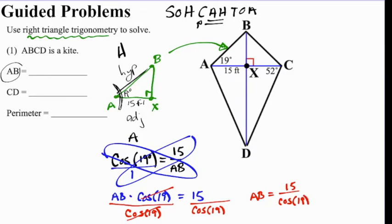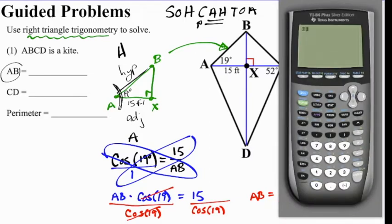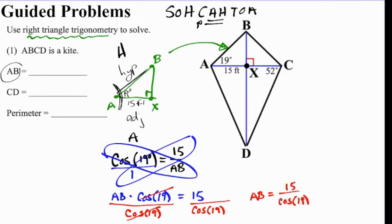We see that it cancels here, and we're left with AB equals 15 divided by cosine of 19 degrees. So we'll get our calculators out, and we'll type 15 divided by cosine of 19 degrees. And that tells us 15.86. So we'll round to the tenths, 15.9. So we have AB. And because this is a kite, we know that AB is congruent to BC. So they're both going to be 15.9.